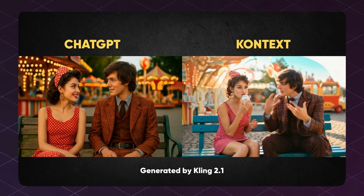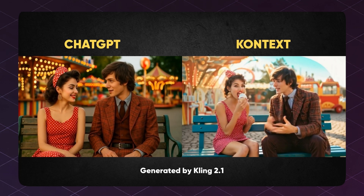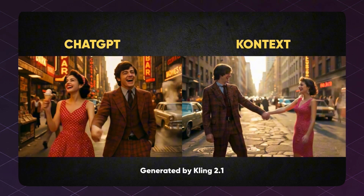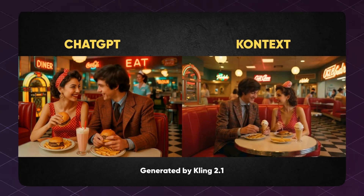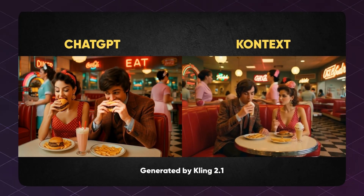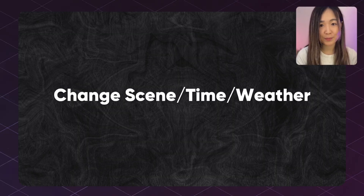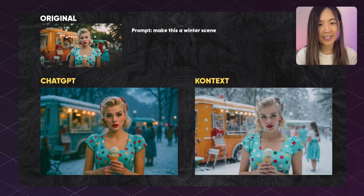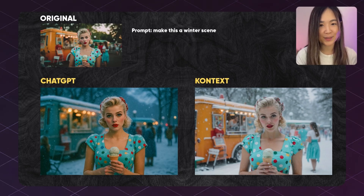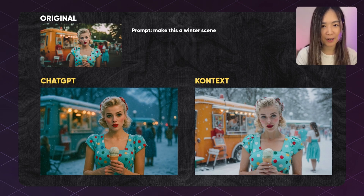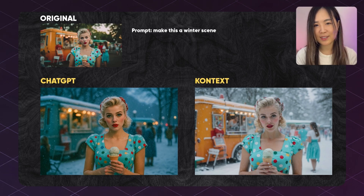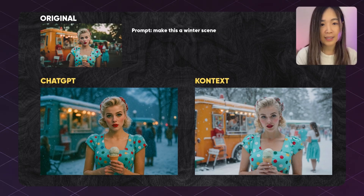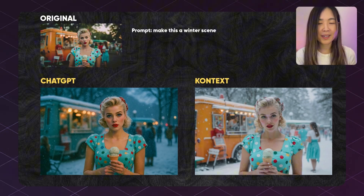We can generate multiple different scenes using the same method and then use image-to-video tools to animate them, putting clips scene by scene together to turn them into a short film. We can also easily transform an image to reflect a different season or time of day. Context keeps most elements consistent but it's a bit strange seeing people in summer clothing standing in the snow. ChatGPT was more intentional — it updated background characters with winter outfits, which makes more sense, but it also changed the color of the food truck, which wasn't part of the prompt.